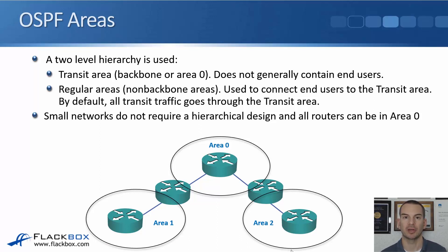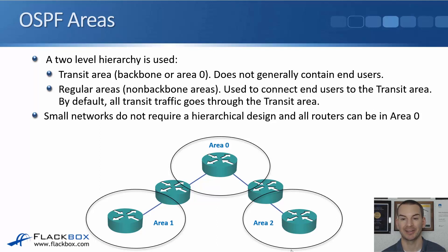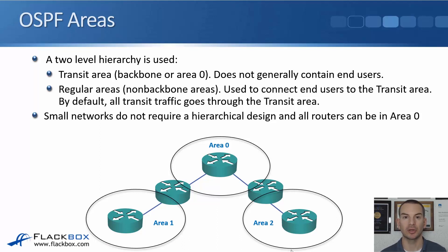Multiple areas are really only required if you've got a larger network. If you've got a small network, there are fewer destination networks and fewer routes, so it's not a problem if routers know about all of them. In that case, we don't need the hierarchical design and all routers can be in area zero. When you do have a single area design, it's always going to be area zero. Later on, if your network grows and you want to go to a multi-area design, this makes it really easy to migrate.